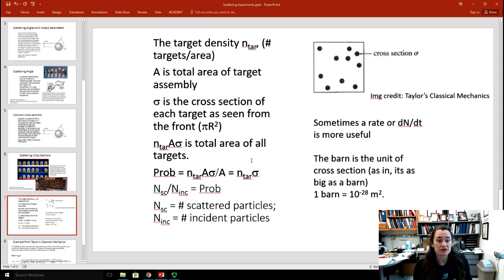You can then set those things equal. You can set N scattered divided by N incident equal to N sub tar times sigma and use that information to solve problems. That's what we're going to do in the next example. Sometimes you might measure a rate or a scattering rate and that would be dN/dt and that's more useful sometimes. And so, you could do that and take the derivative of N.